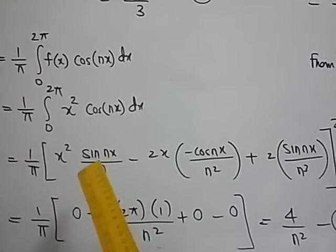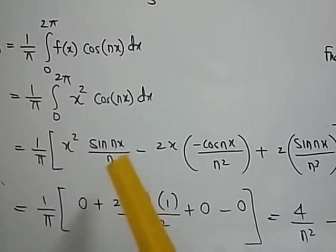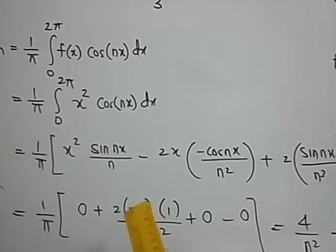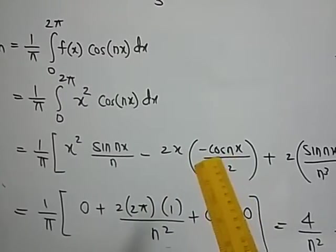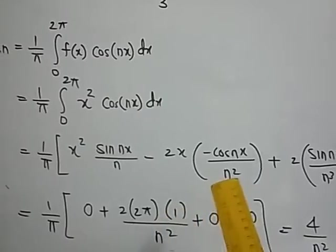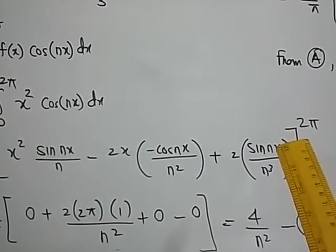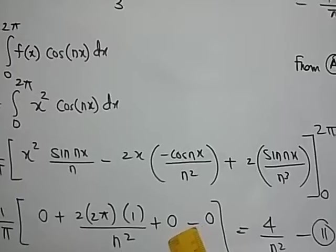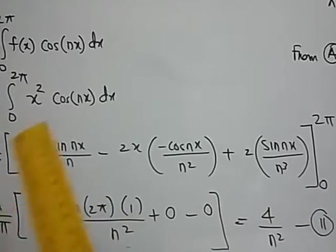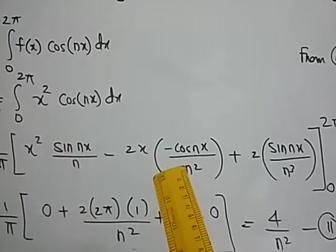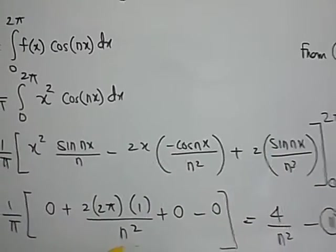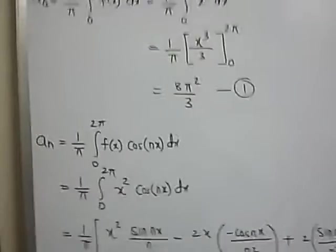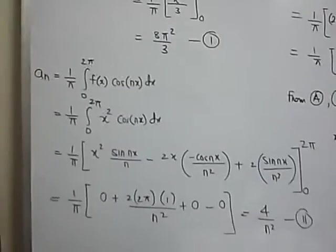When you put the upper limit here you will get sin(2nπ) which is 0. So first my value is 0. Next minus minus plus 2 into x is replaced by 2π and this will be cos(2nπ) whose value is 1 divided by n². Plus when you put x as 2π it will be sin(2nπ) which is 0. So this is 0. Minus when you put lower limit in entire of this term this is going to become 0. This is going to become 0. This is going to become 0. So when you calculate all this it comes out to be 4 by n². So we first calculated a₀. Then we calculated aₙ.